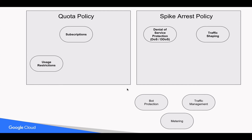Likewise, bot protection is a Spike Arrest policy use case, metering would be a Quota policy use case, and traffic management would be a Spike Arrest policy use case.